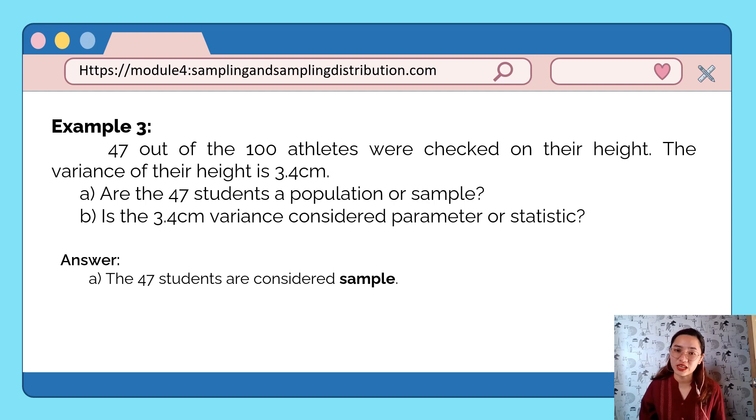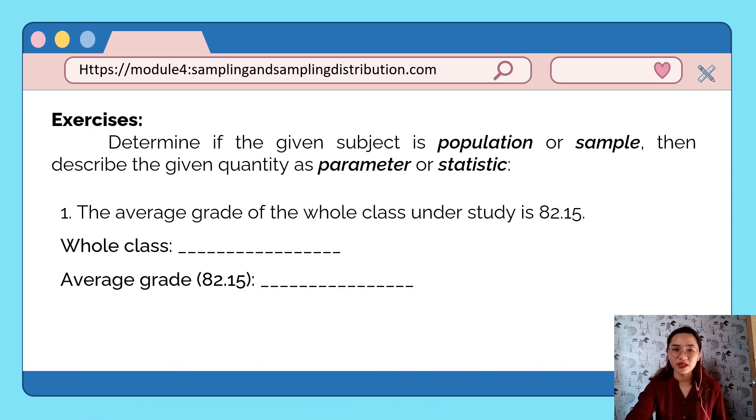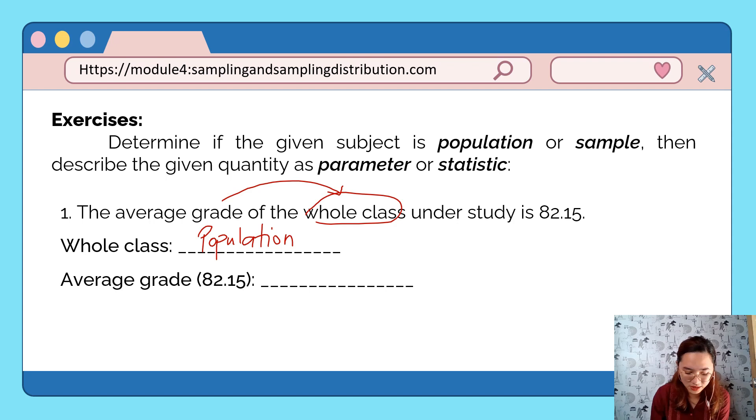Let's have these exercises. Determine if the given subject is population or sample, then describe if the given quantity is a parameter or statistic. Number 1: The average grade of the whole class under study is 82.50. The whole class, so that means it's a population. Next, the average grade 82.50 describes our whole class, which is a population, therefore that is a parameter.